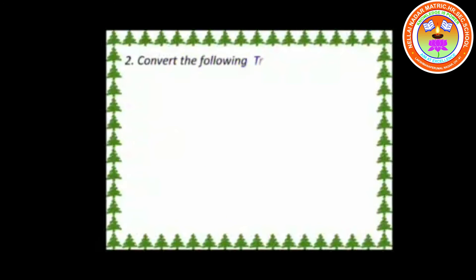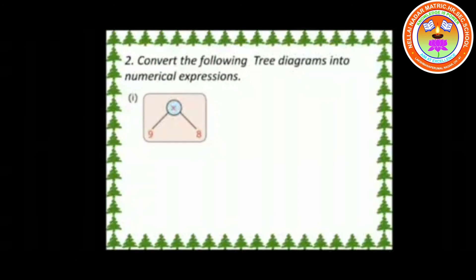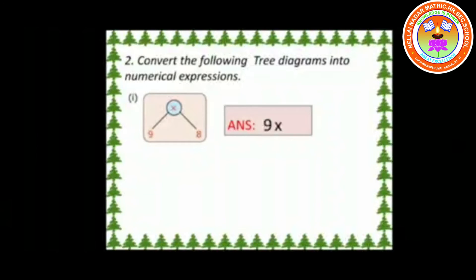Question 2: Convert the following tree diagrams into numerical expressions. First one: the node is the symbol ×, that is the branch, and its leaves are 9 and 8, so the answer is 9 × 8.